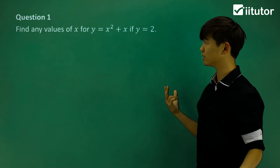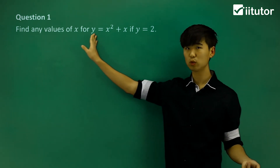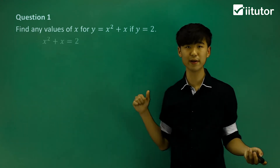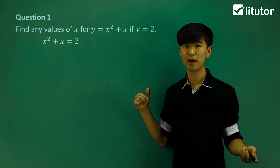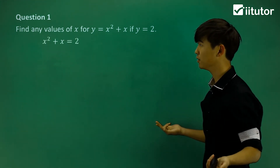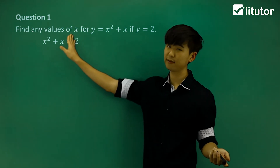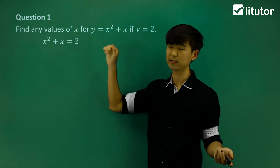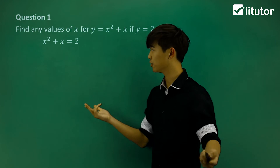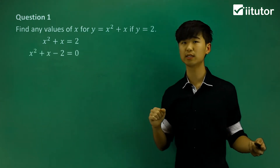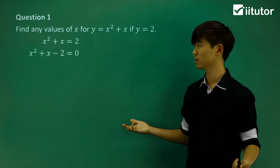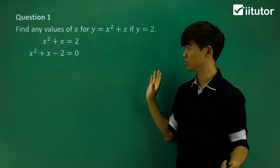So if y is equal to 2, let's put 2 in place of y. If I rewrite it, I have x² + x = 2. From there, I want to find the values of x. To start us off, I want to move 2 to the other side, so we get x² + x − 2 = 0.